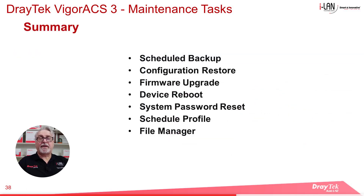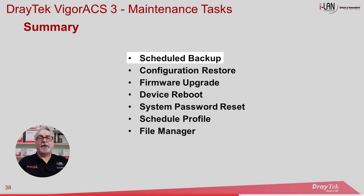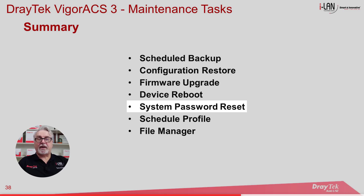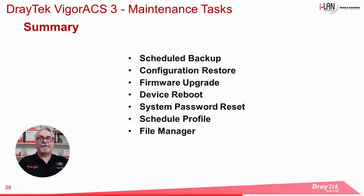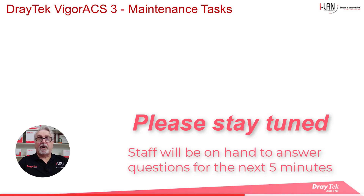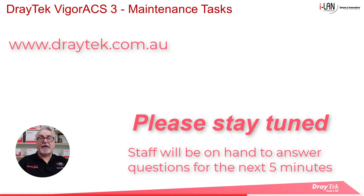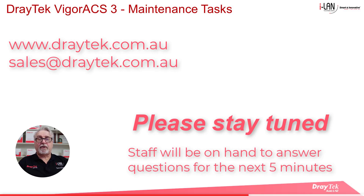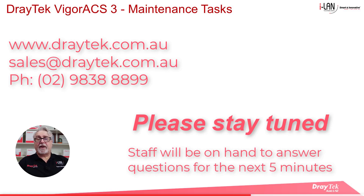We've reached the end of the presentation today. To summarise, we looked at the menu items within the Maintenance menu of ACS3: Scheduled Backup, Configuration Restore, Firmware Upgrade, Device Reboot, System Password Reset, Scheduled Profile, and File Manager. We'll be answering questions in the live chat on the right of your screen for the next five minutes. For more information about Draytech products, please check out our website at www.draytech.com.au, or send an email to sales@draytech.com.au, or call us on 02 9838 8899. Don't forget to like and subscribe, and click the bell for notifications on new videos. Thanks and bye for now.